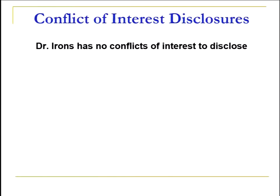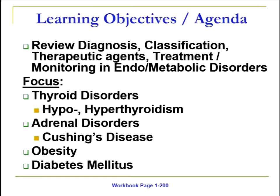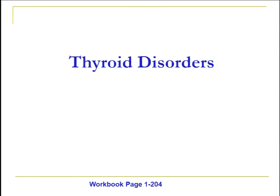Unfortunately, with 75 minutes, we can only really hit the highlights. I have no conflicts of interest. What we are going to review is the main concepts in the treatment of hypo- and hyperthyroidism, Cushing's disease as part of adrenal insufficiency and adrenal disorders, obesity and newer medications to treat obesity, and we'll spend most of our time on diabetes management, in particular diabetes mellitus. Topics we won't cover include pituitary disorders, hypoadrenal disorders, PCOS, and diabetes insipidus — though there's useful information on those in your workbook. So with that, let's start with thyroid disorders.